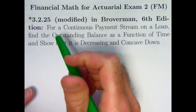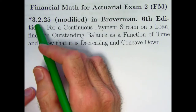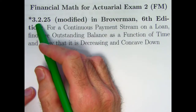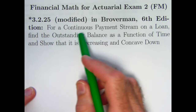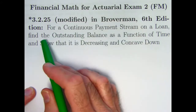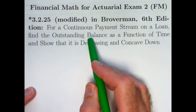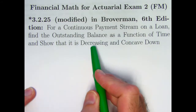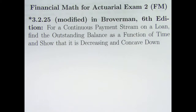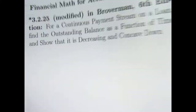Hello. In this video we're going to look at a modified form of starred problem 3.2.25 for a continuous payment stream on a loan — find the outstanding balance as a function of time and show that it is decreasing and concave down. It's a general thing that requires some calculus, but we're going to illustrate some important points, so it's definitely worth your while to look at.